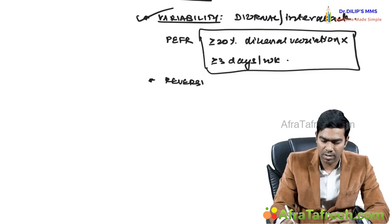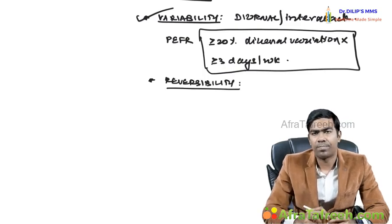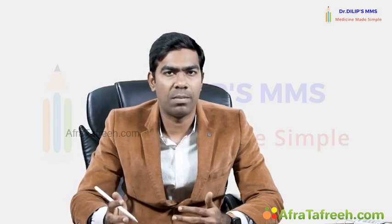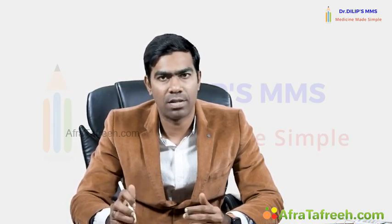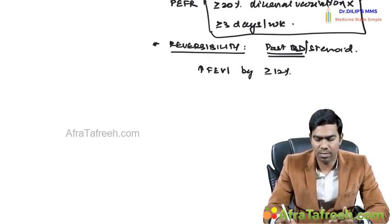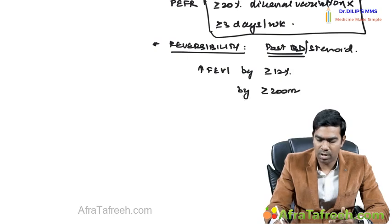Next is the most important: reversibility testing. Give a bronchodilator and after 15 to 20 minutes perform another PFT — typically after salbutamol nebulization. If the improvement in FEV1 reaches a specific cutoff — an increase in FEV1 by at least 12% in relative terms or at least 200 ml in absolute terms — that is characteristically defined as reversibility.